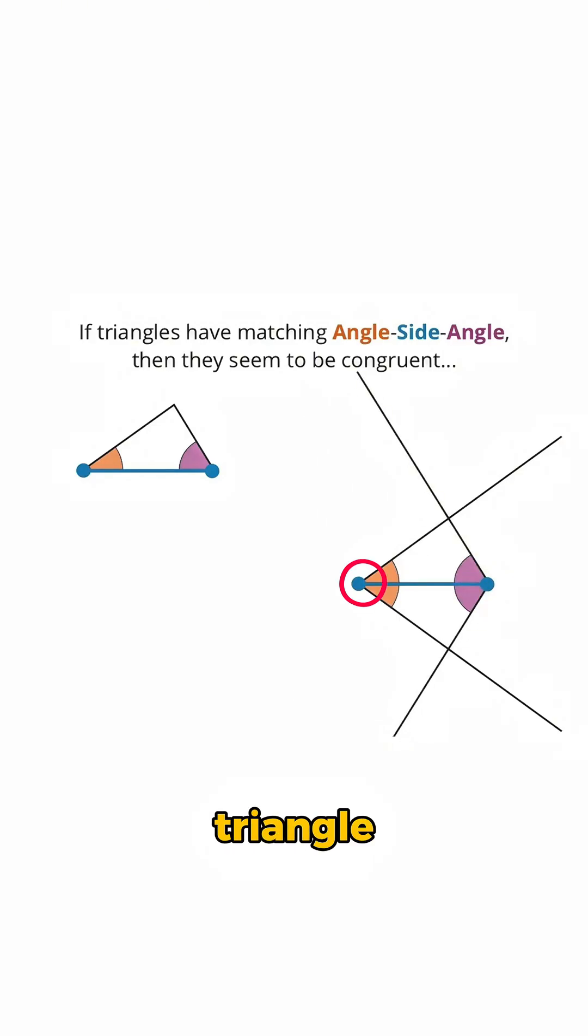Now for the new triangle we're making over here, two of its corners, or vertices, are over here and over here. But where can its third vertex be so that our new triangle has matching angle-side-angle with our original triangle up here? There are two correct answers.